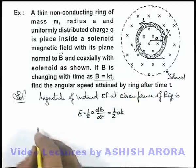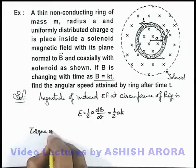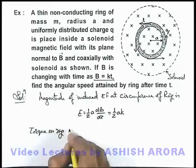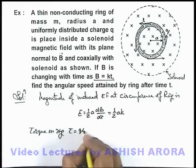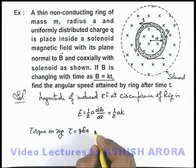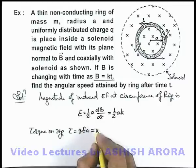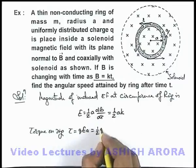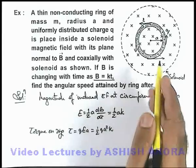And here we can directly write torque on ring. Due to this electric field, torque can be written as qEa. So this torque can be directly written as half ak is the electric field, so it is half qa²k, that is the torque acting on the ring.